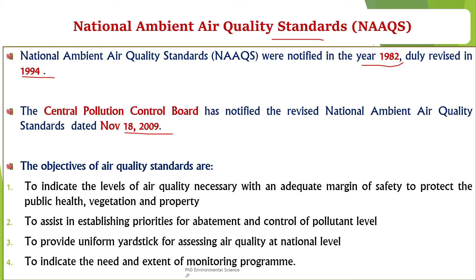The first objective of these standards is to indicate the level of air quality necessary, with an adequate margin of safety, to protect public health, vegetation, and property. The standards specify safe concentration levels for various pollutants, and these levels include a safety margin to account for uncertainties and ensure comprehensive protection.